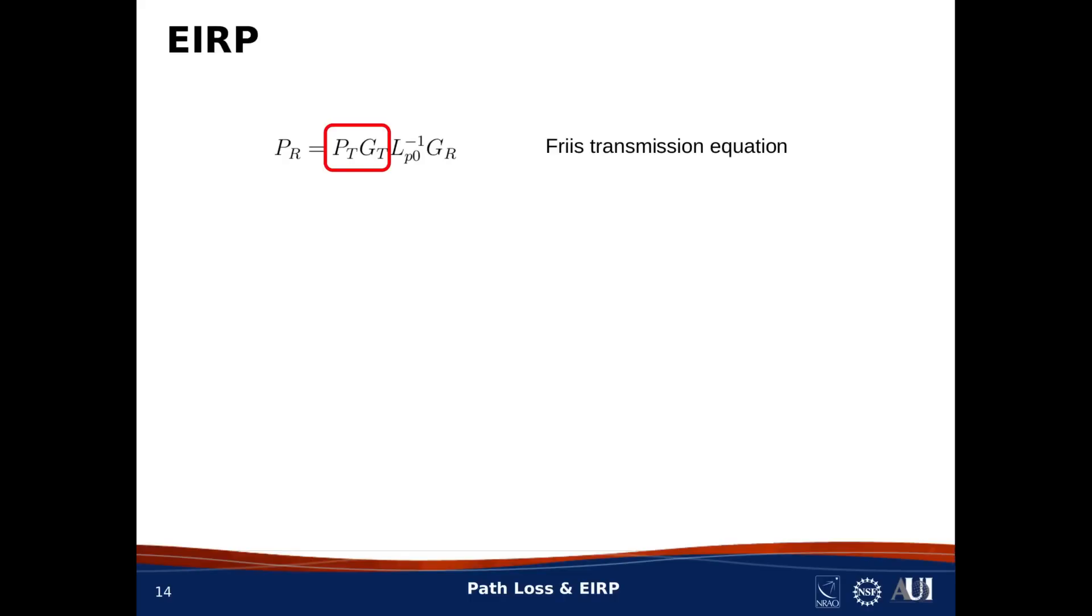Here's something else that comes out of the Friis transmission equation. The first two factors in the equation are transmit power, P sub T, and transmit gain, G sub T. The product of these two factors has units of power, that is, watts. We call this product the effective isotropic radiated power, abbreviated EIRP.